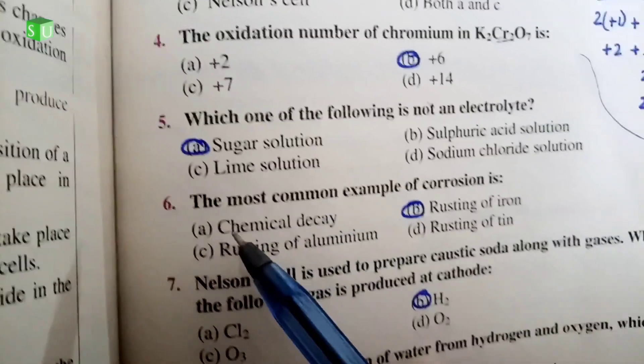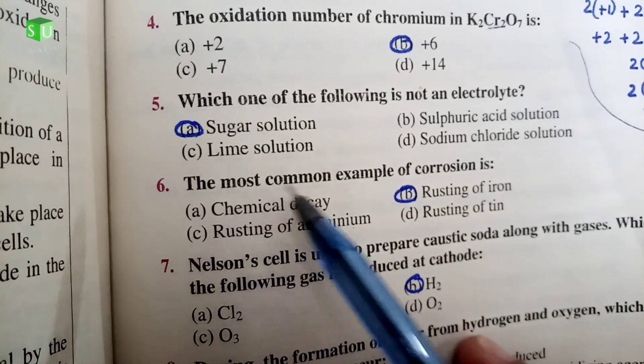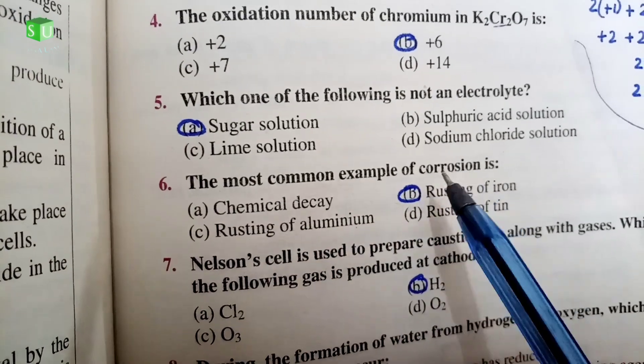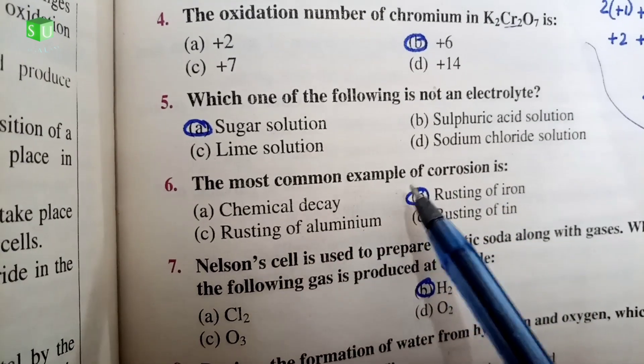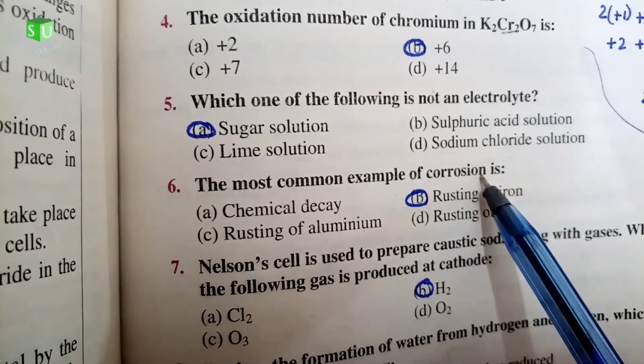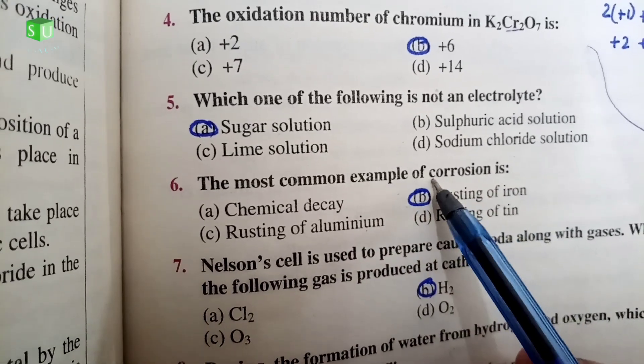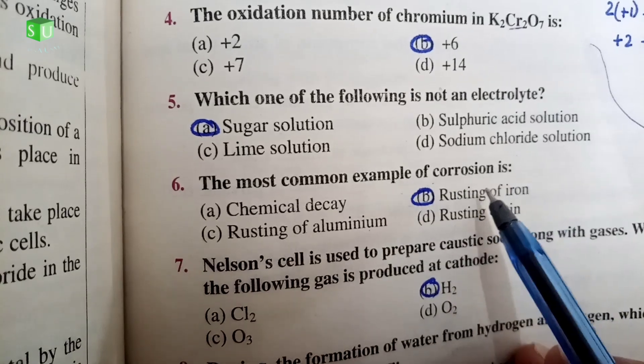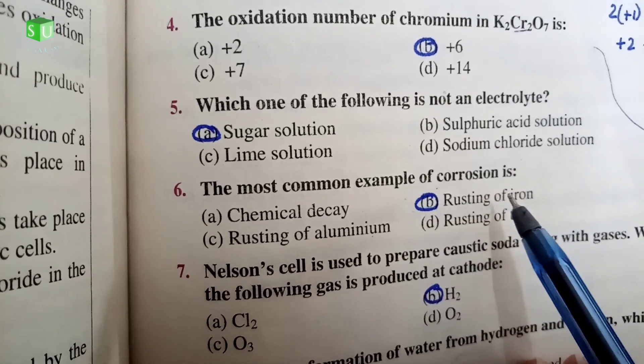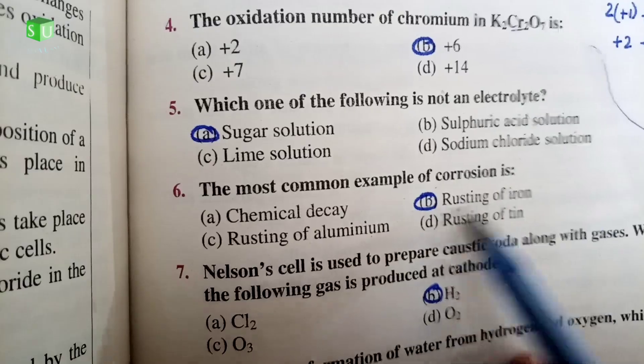The correct answer is A. Next one is the most common example of corrosion. Corrosion, the most common example for us is rusting of iron.